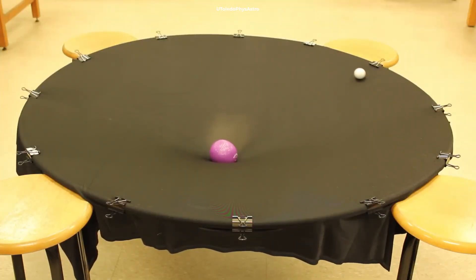To visualize this, imagine you're rolling a marble across that stretched rubber sheet. As the marble gets closer to the heavy ball, it slows down and spirals inward, moving more and more slowly as it gets closer to the center.